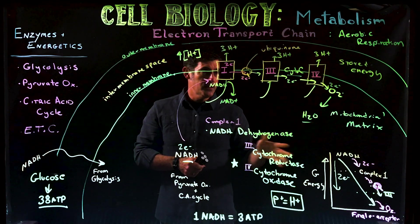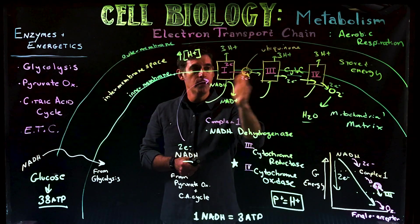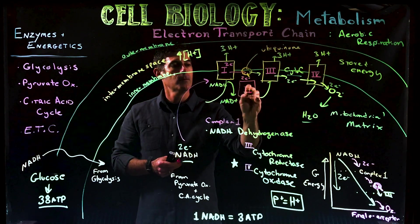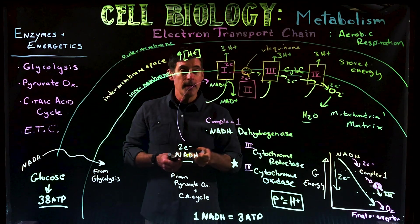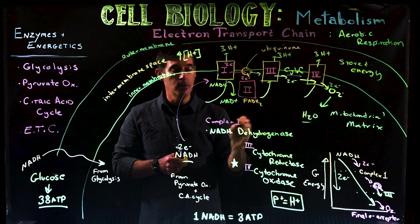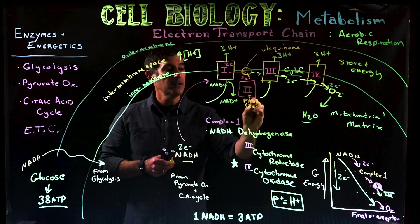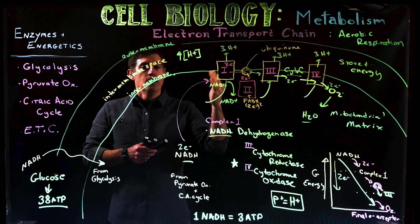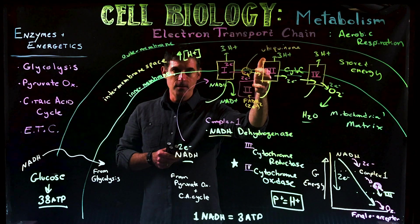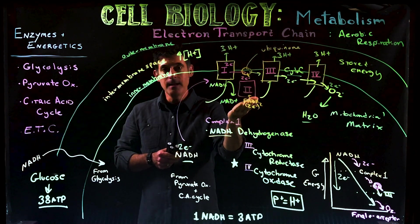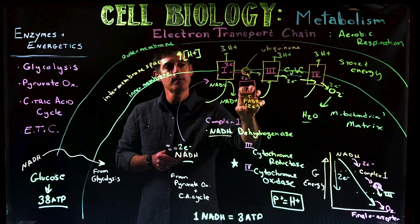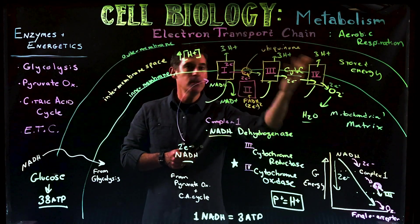Before finishing, let's address the missing Complex II. Back in the citric acid cycle, there was one oxidation step that produces FADH2, which also carries two electrons just like NADH. Complex II is actually an enzyme bound to the inner membrane of the mitochondria — it's the site where that oxidation occurs and where FAD picks up electrons to become FADH2. So FADH2 is actually bound to this protein and technically attached to the electron transport chain itself.